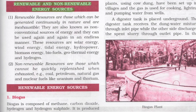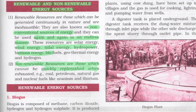Renewable and non-renewable energy sources: Renewable resources are those which have the ability to generate energy continuously in nature — they are inexhaustible and known as non-conventional sources of energy, and can be used again and again. Examples include wind energy, tidal energy, hydropower, biomass energy, etc. Non-renewable resources of energy are those which cannot be quickly replenished; when exhausted, they take millions of years to be restored — for example, coal, petroleum, natural gas, and nuclear fuels like uranium and thorium.